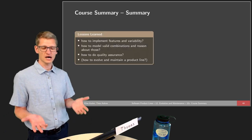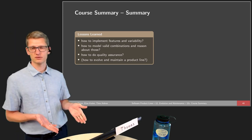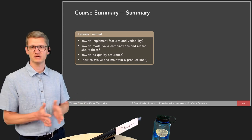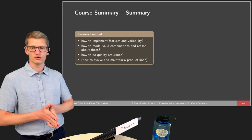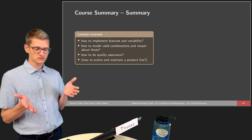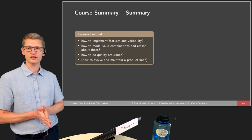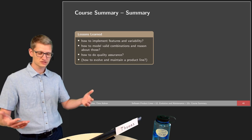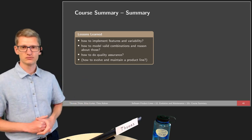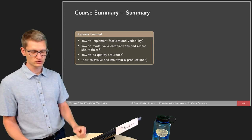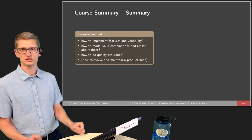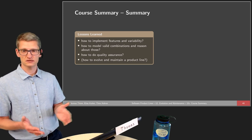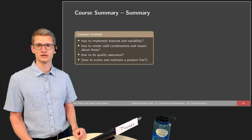Overall, in this course we looked at how to implement features and variability — since ad hoc approaches are more about implementing variability than features themselves. We looked at valid combinations of features, how to model what features belong to a product line and what valid combinations to support. We do this during domain analysis, then implement those features, and then perform quality assurance — understanding what feature interactions are, why they are especially a problem for product lines, how to detect them statically and dynamically, and how to cope with those interactions. And briefly, we also looked at how product lines evolve and how to maintain them over time.